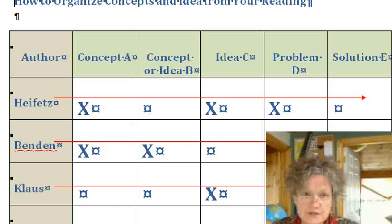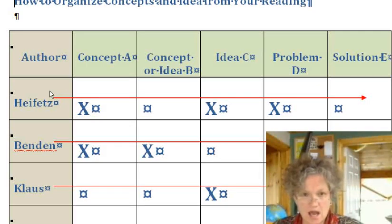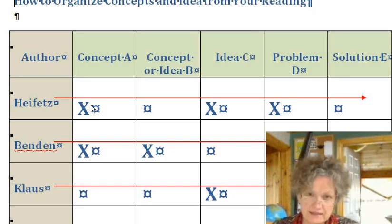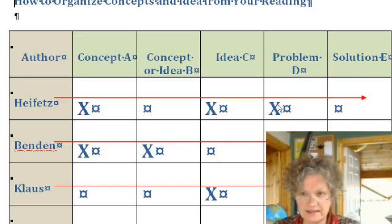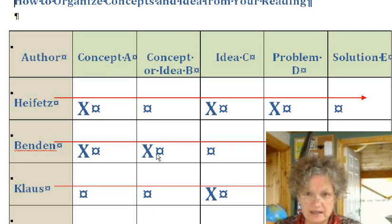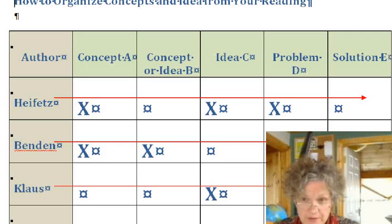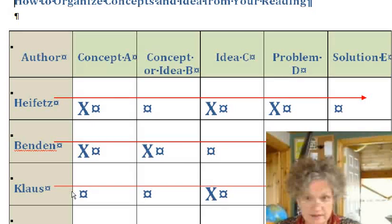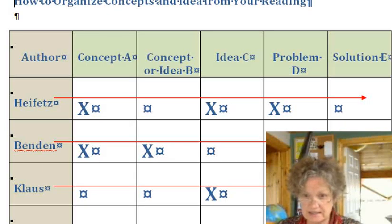Now, most students seem to want to organize this way. Heifetz said this, this, and this, whereas Benden added this, came up with it, talked about the problem as well, came up with this solution. Klaus, on the other hand, his study really only addressed this idea, and Holtz did this, this, and came up with a different solution.